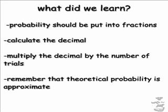Lastly, we have to remember that theoretical probability is approximate. It's not an exact science. So it might happen, it might not. There's always a chance that other outcomes may come up. But it's theoretical, so it could possibly happen. And that's about it.